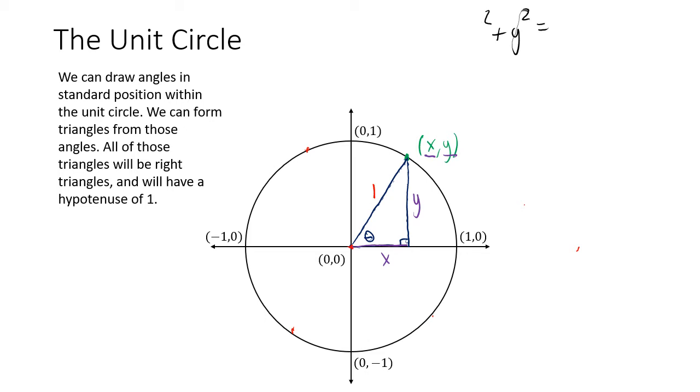The Pythagorean theorem is a² + b² = c². But for this particular triangle, we can say that's x² + y² = 1, because 1² is just 1.